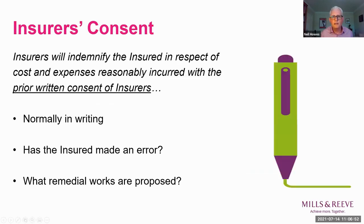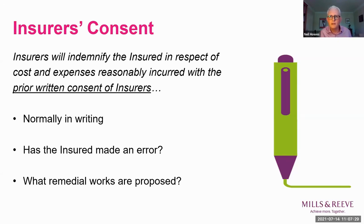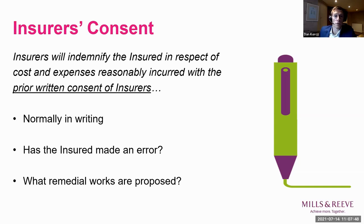The first essential element is insurer's consent. The example wording states that insurers will indemnify the insured in respect of costs and expenses reasonably incurred with the prior written consent of insurers. Generally speaking, notifications and consent under a policy of insurance are required to be in writing — seeking consent over the phone is normally not sufficient. Requiring consent ensures insurers can become involved at an early stage, making sure the insured actually did something wrong which justifies a payment, which might entail instruction of an appropriate expert funded by the insurers. Insurers will also want to ensure any proposed remedial works are reasonably priced and will actually solve the problem.